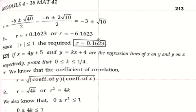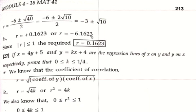Therefore r equals minus 3 plus root 10 equals approximately plus 0.1623, or r equals minus 3 minus root 10 equals approximately minus 6.1623. Since r must lie between minus 1 and plus 1, we take r equals 0.1623 and neglect the other value. Therefore the correlation coefficient r equals 0.1623.